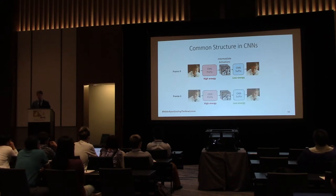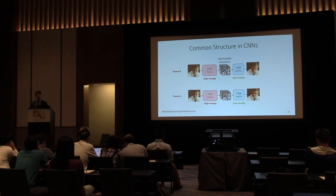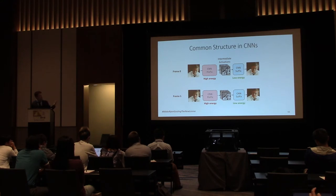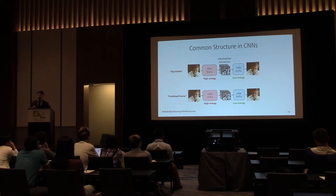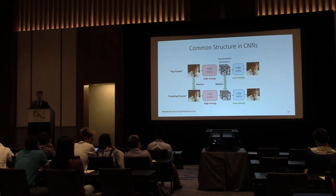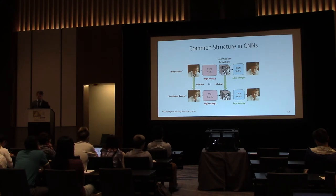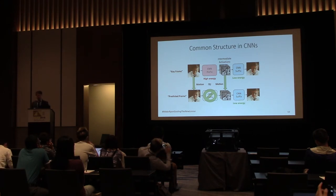When processing video, this immediately seems odd: we see motion in the input being replicated in the intermediate activations. We can exploit something similar to video compression. In video compression, a keyframe is computed normally, and then a predictive frame uses motion matching. Because the motion is the same, we can use our understanding of input motion to produce synthetic predicted activations, send them to the CNN suffix, and get our vision result.